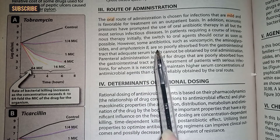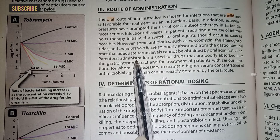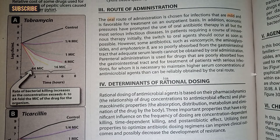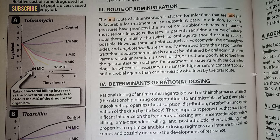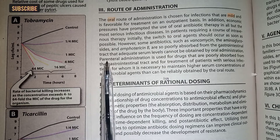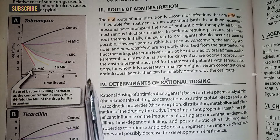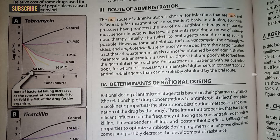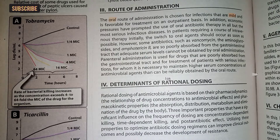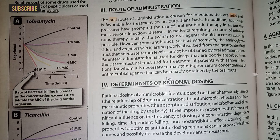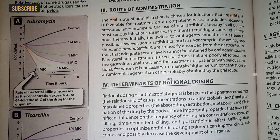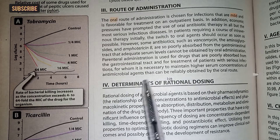Vancomycin، amphotericin B اور aminoglycosides کو oral route نہیں دیں گے کیونکہ ان کی serum level highly obtained نہیں ہوتی۔ اس وجہ سے parenteral administration ان drugs کے لیے use ہوتی ہے جو poorly absorbed ہوتے ہیں from gastrointestinal tract۔ یہ mostly use ہوتا ہے جب infection serious ہوتا ہے اور serum concentration کا level high ہونا ضروری ہو۔